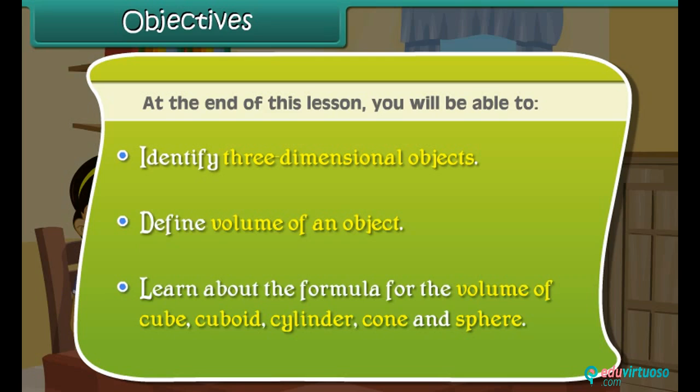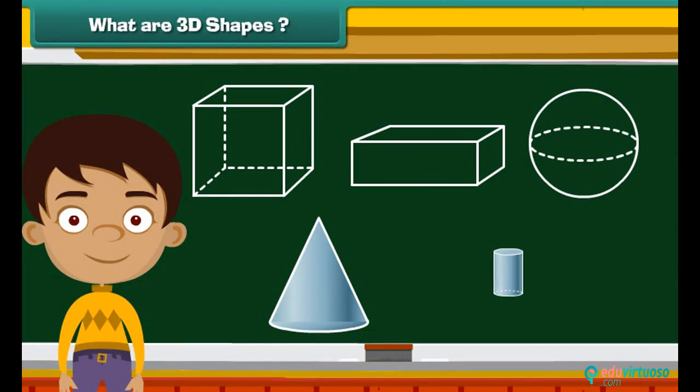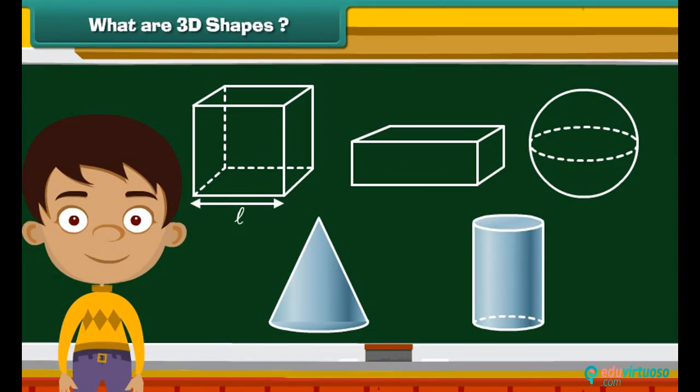Hey, look at these shapes. What did you notice? These shapes have three dimensions: length, width, and height. Therefore we call these shapes three-dimensional shapes. All the three-dimensional shapes are solids.